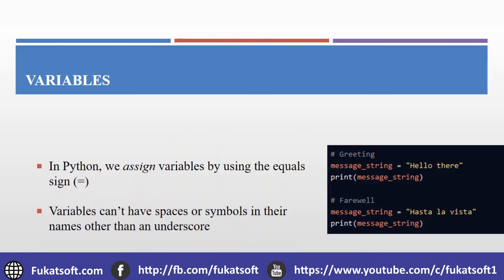To store data, we use a variable. To define a variable, we write a variable name, then an equal sign, and on the right side is the value to be stored. In the assignment, we use an equal sign to store the value in the variable. The variable name can be something like a, b, c, d, or a descriptive name like 'message'.